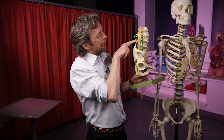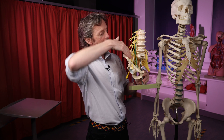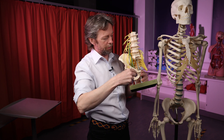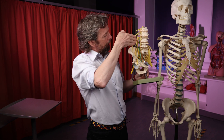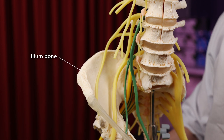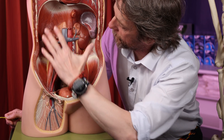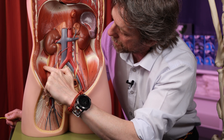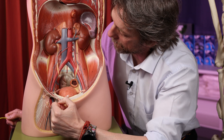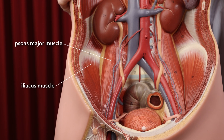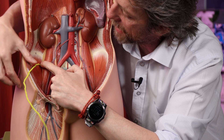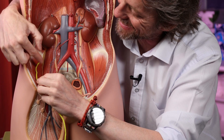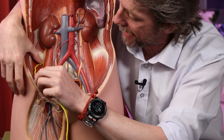The nerve runs laterally out to the ilium, where we have iliacus sitting on the ilium and psoas major nearby — both hip flexor muscles. Looking at the posterior abdominal wall, we can see the iliacus muscle covering the ilium and psoas major. The lateral femoral cutaneous nerve appears from posterior to psoas major and then runs around the pelvis, anterior to the iliacus muscle, deep to the iliacus fascia.